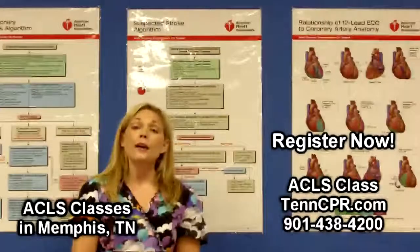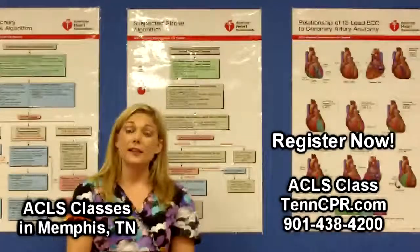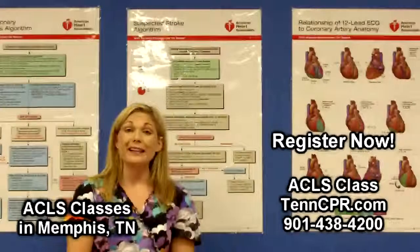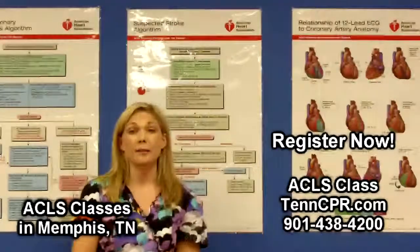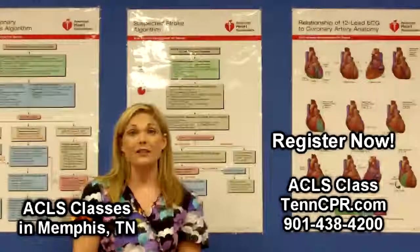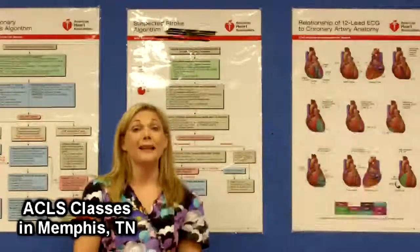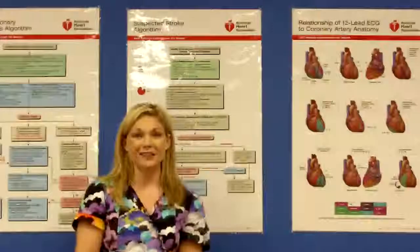If any one of the three parts of the Cincinnati Stroke Scale assessment is abnormal, there is a 72% chance that the patient is having a stroke. It's time to activate the emergency response system and get that patient to the nearest stroke-approved facility for further care.